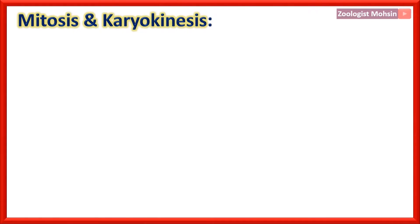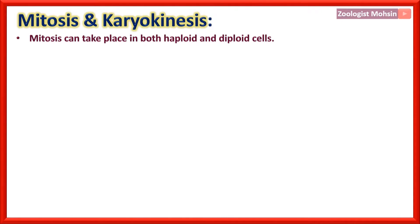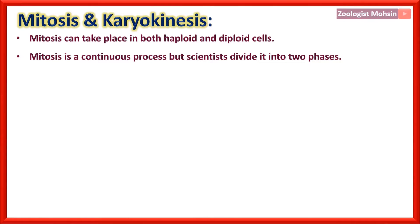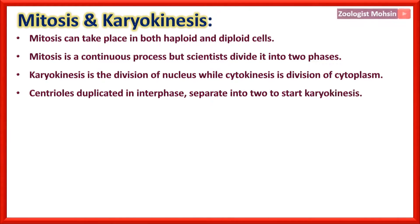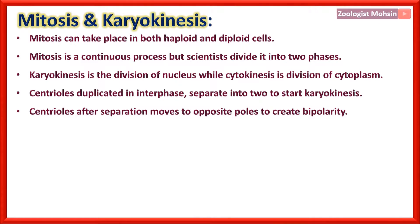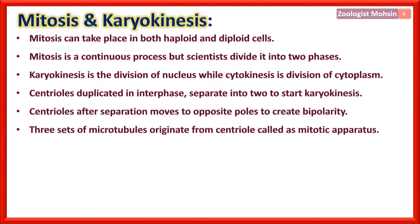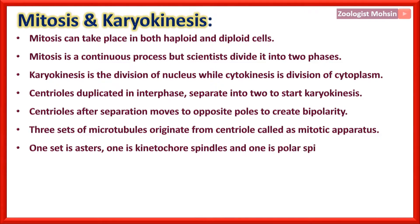Mitosis and Karyokinesis. Mitosis can take place in both haploid and diploid cells. It is a continuous process but scientists have divided it into two phases: Karyokinesis (division of nucleus) and Cytokinesis (division of cytoplasm). Centrioles duplicated in interphase separate to start karyokinesis, then move to opposite poles to create bipolarity. Three sets of microtubules originate from centrioles forming the mitotic apparatus: asters, kinetochore spindle, and polar spindle.